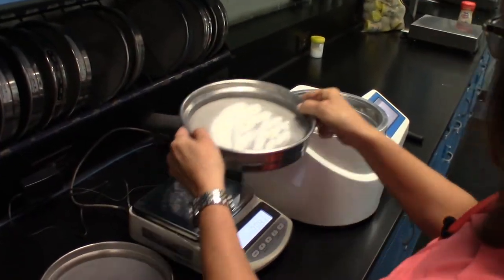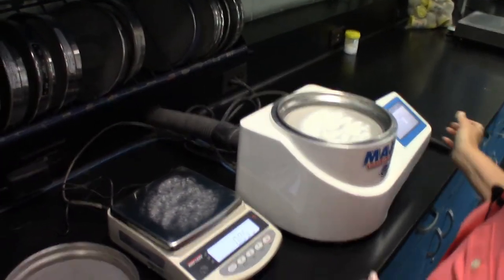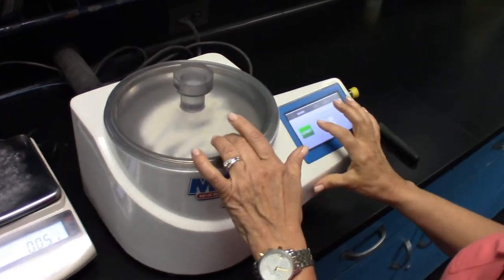Once I have that weight recorded, I will place the screen on the micro air jet sieve, place the cover on the sieve screen, and press start.